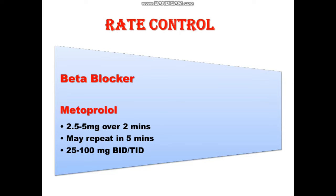Beta blocker is used mostly whenever a patient has coronary artery disease along with atrial fibrillation. The most commonly used beta blocker is metoprolol, also known as Lopressor or Toprol. The loading dose is 2.5 to 5 mg over 2 minutes; this may be repeated in 5 minutes up to 3 times. The maintenance dose is 25 to 100 mg BID or TID. These doses are not essential for USMLE exams but are important for clinical practice.